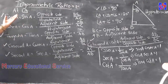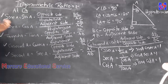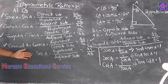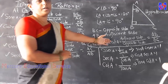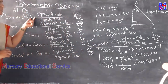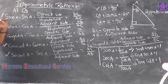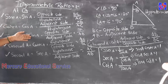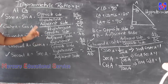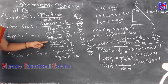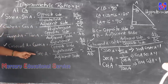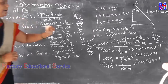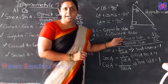These are the six trigonometric ratios: sin A, cos A, tan A, cosecant A, secant A, and cot A. To summarize: sin A equals opposite side by hypotenuse; cos A equals adjacent side by hypotenuse; tan A equals opposite side by adjacent side; cosecant A equals hypotenuse by opposite side; secant A equals hypotenuse by adjacent side; and cot A equals adjacent side by opposite side.